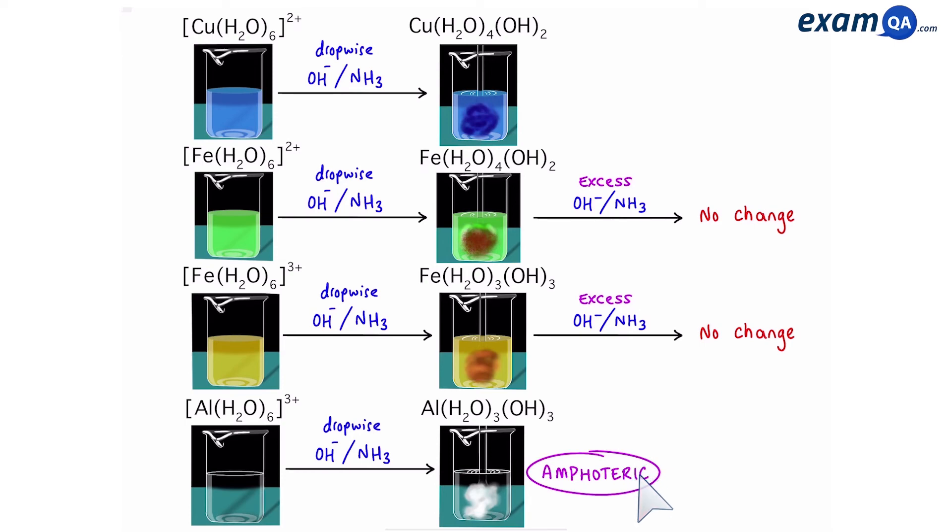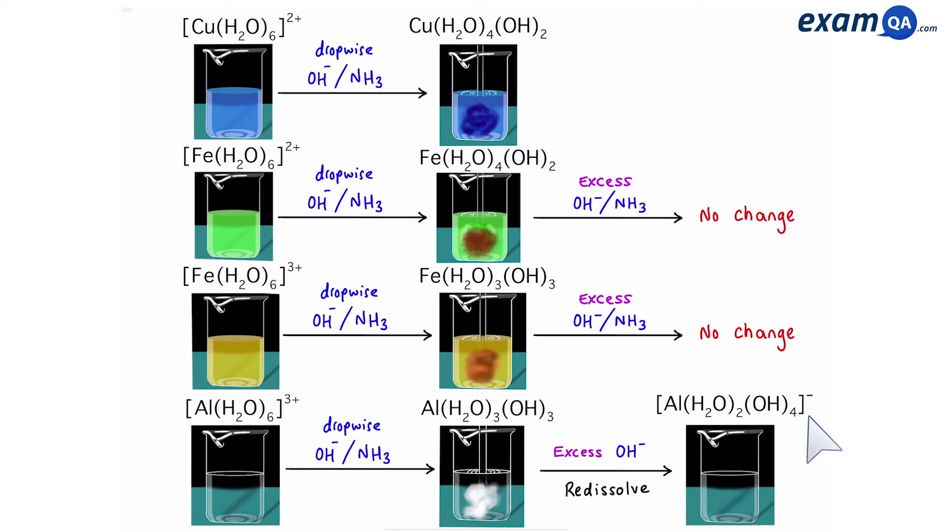However, with aluminium, we said it was amphoteric, meaning that it can act as a base or an acid. So if I add base to this, the acidic part will take over and it will react, forming the following compound. Notice how we broke down another water, so it's gone from 3 waters to 2 waters, and from 3 hydroxides to 4 hydroxides. Since aluminium is 3+, and we have 4 hydroxides, that means we're going to get the following. This has a minus charge, so it will re-dissolve as a clear solution.